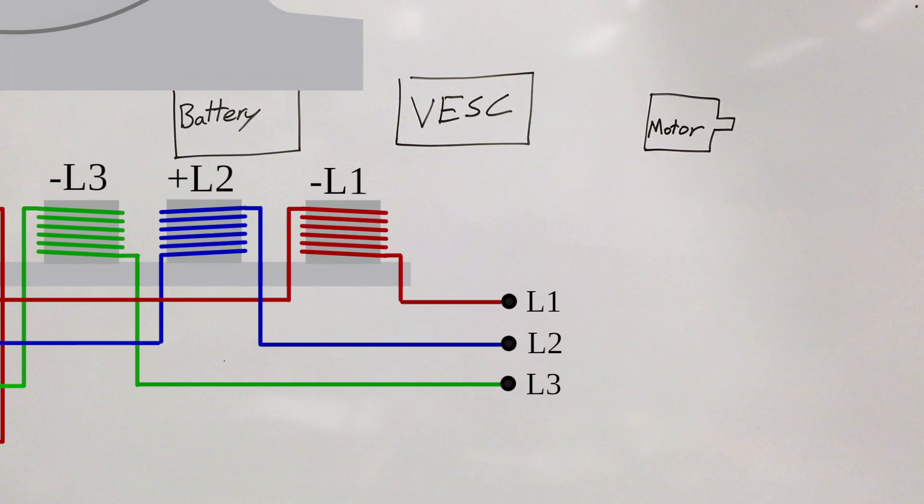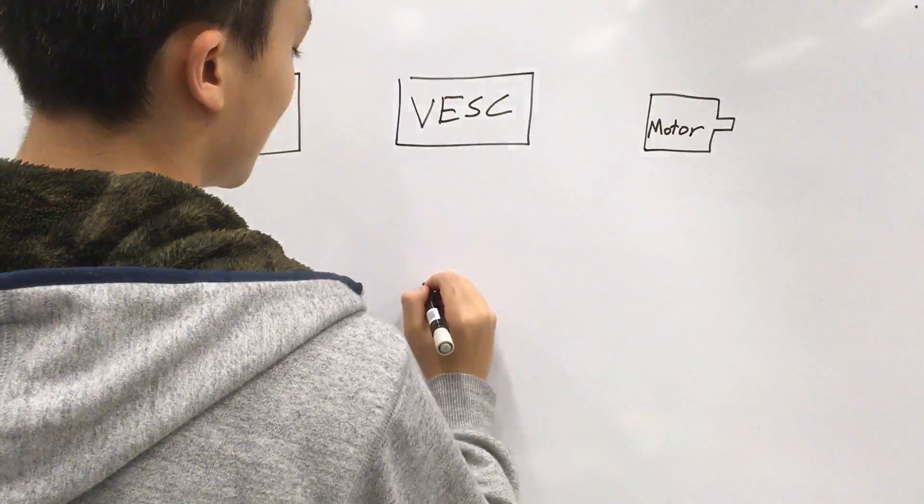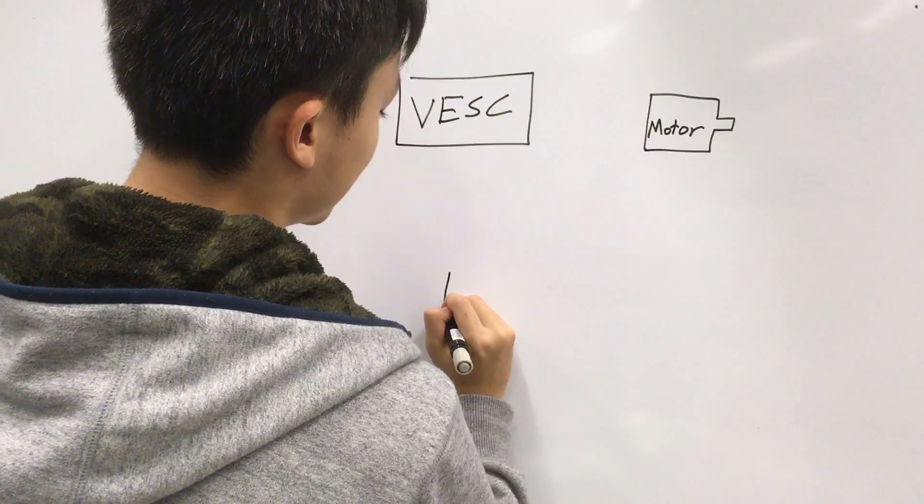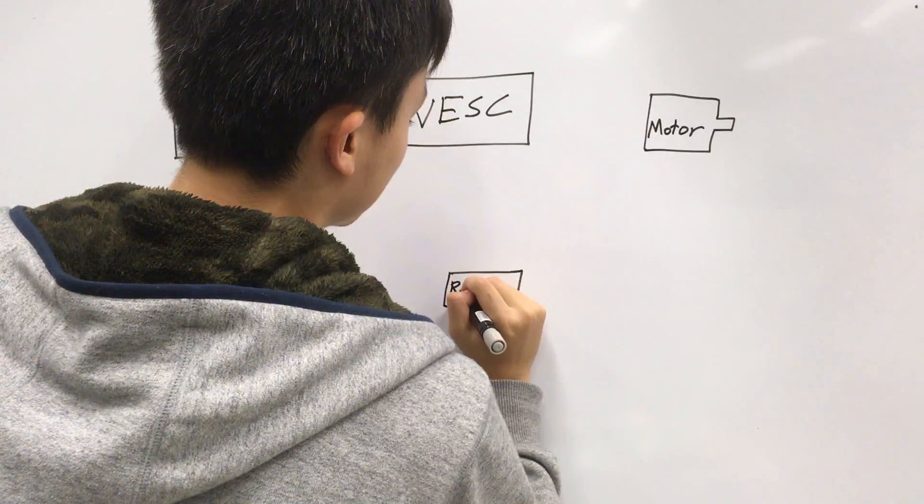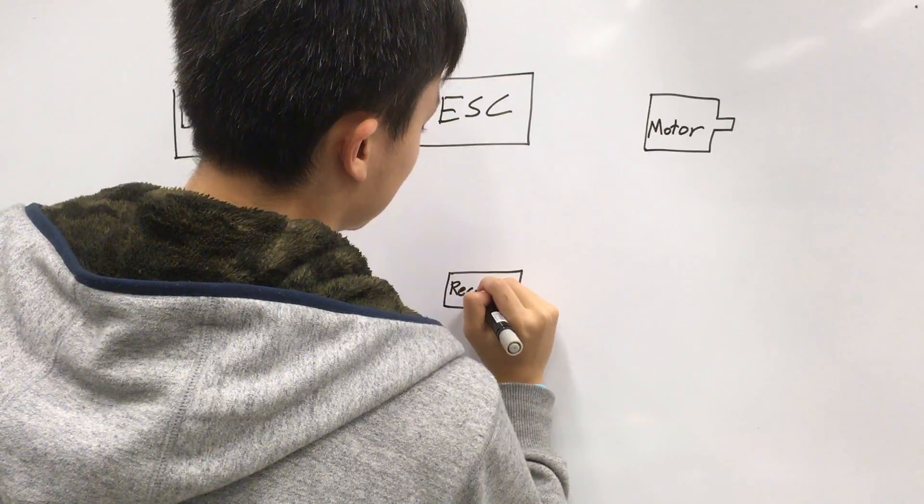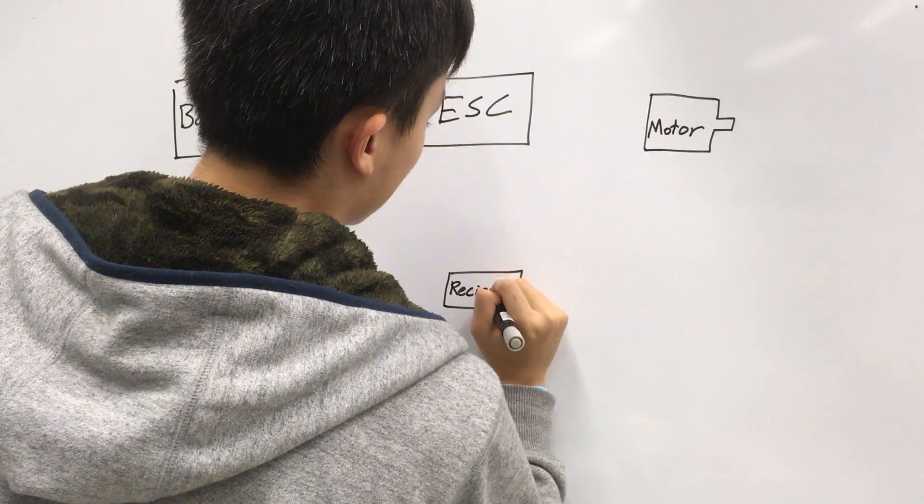And to do that, it sends the motor power from two lines at a time. So now once that two line, the power from the two lines is sent, it changes to another two line and another two line. So this pushes the rotor inside the motor to different stages. And by controlling the speed at which it changes into the changes the two lines, it can change the speed at which the rotor is spinning at, which is how the VESC controls the speed.